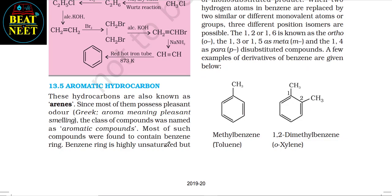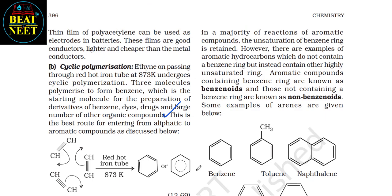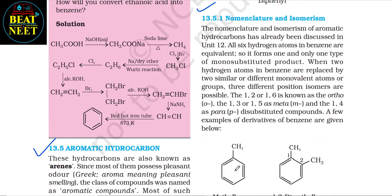13.5 Aromatic hydrocarbons: these hydrocarbons are also known as arenes, since most of them possess a pleasant odor. The class was named aromatic compounds, and most contain a benzene ring. Benzene is highly unsaturated but in a majority of reactions the unsaturation is retained. There are also aromatic hydrocarbons that do not contain a benzene ring but instead contain other highly unsaturated rings. Compounds containing a benzene ring are known as benzenoids; those not containing one are non-benzenoids. Examples include benzene, toluene, naphthalene, and biphenyl.